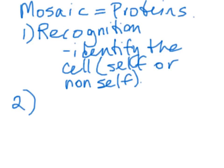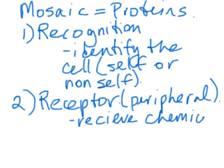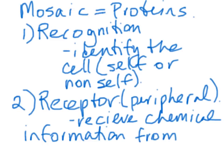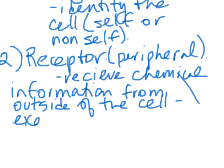Second function: receptor proteins, which usually sit on the surface as peripheral proteins. These receive chemical information from outside. For example, a hormone would travel through the bloodstream and bind to a receptor protein to signal the cell that it was time to do something.